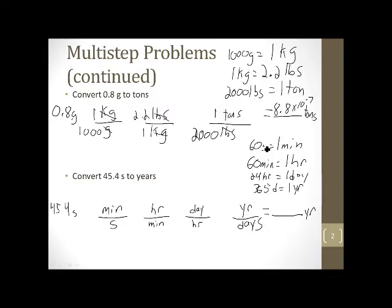So one minute is 60 seconds or 60 seconds per minute. So 60 seconds per one minute, 60 minutes per one hour, 24 hours per one day and 365 days per one year. I cancel my units. Seconds are gone. Minutes are gone. Hours are gone. Days are gone. And I'm left with years. Hip, hip, hooray. So I plug into my calculator. 45.4 divided by 60. That answer divided by 60. That answer divided by 24. That answer divided by 365. And I get 1.44 times 10 to the minus six years. A real teeny tiny number.